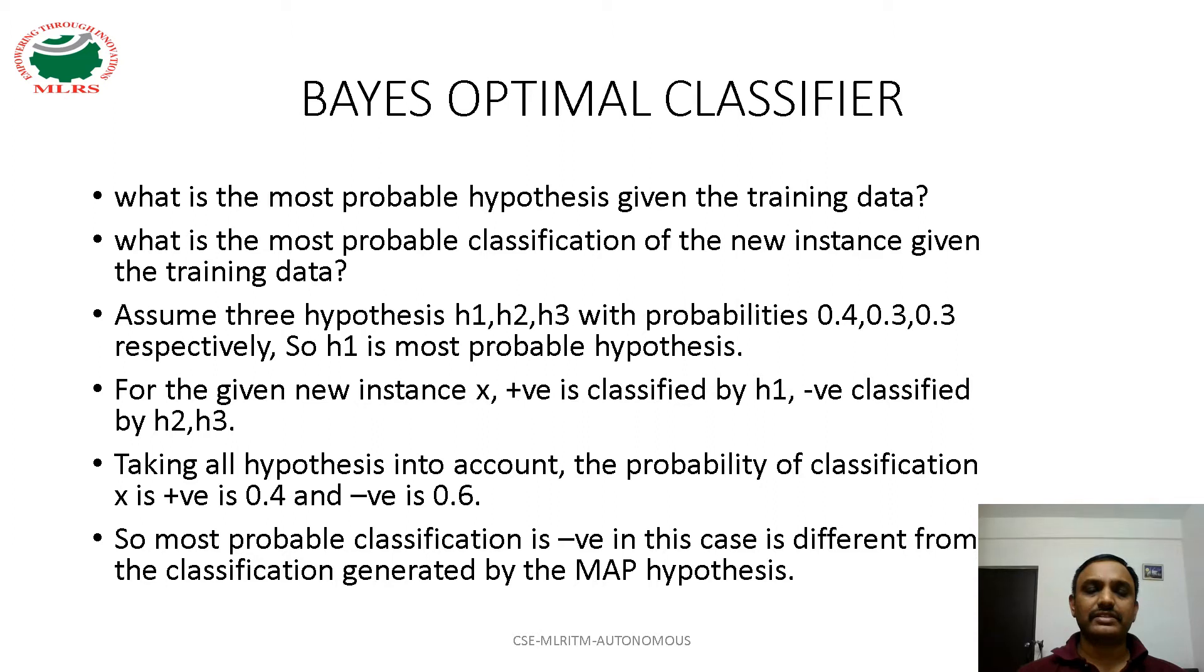Assume three hypotheses H1, H2, H3 with probabilities 0.4, 0.3, 0.3 respectively. So H1 is the most probable hypothesis.